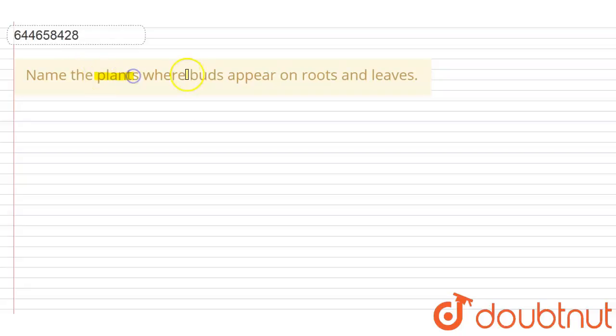Name the plants where buds appear on roots and leaves. So the buds, they are the undeveloped embryonic shoot...